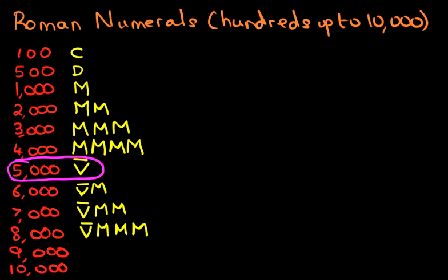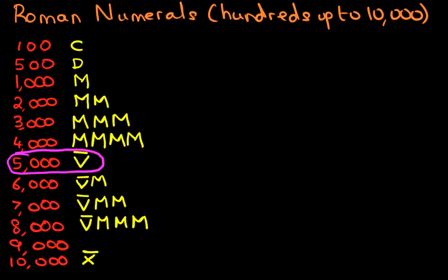Now we'll do ten thousand next. Ten thousand is an X with a dash on top. I'm just going to scroll down a little bit — ten thousand is X with a dash on top. Remember, the X is ten and the dash on top represents a thousand. So those are the two new symbols we've learned: five thousand is V with a dash on top, and ten thousand is X with a dash on top.